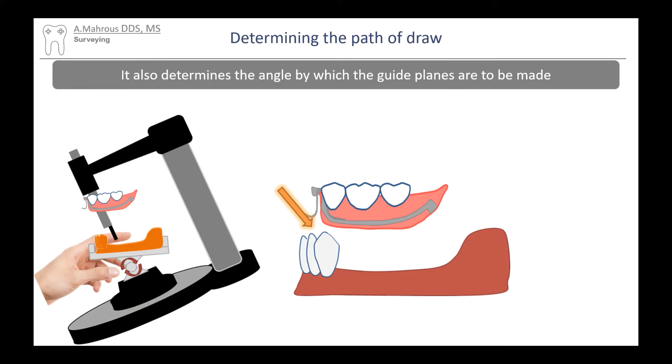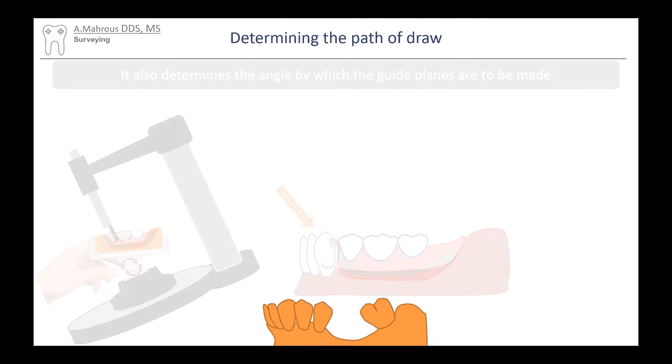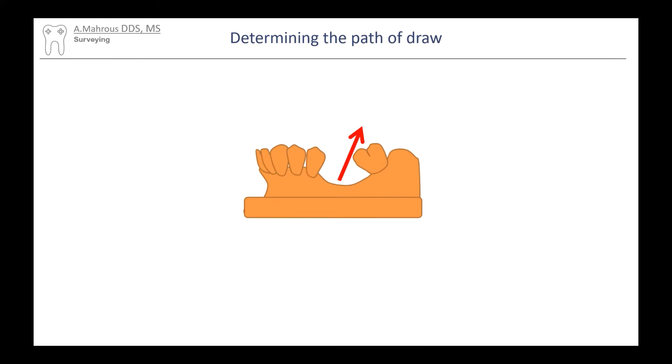The guide planes are prepared to coincide with your planned path of draw that you did on the surveyor, and eventually your RPDs would also follow the same path of draw. You can now appreciate that tooth preparation for the guide planes is dependent upon the planned path of draw that you've decided on the surveyor.